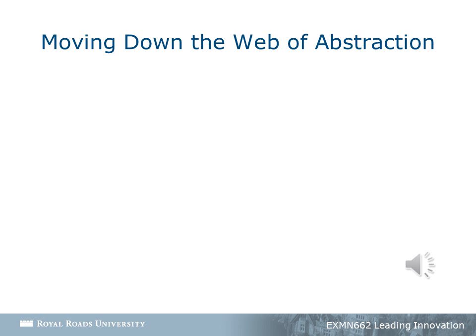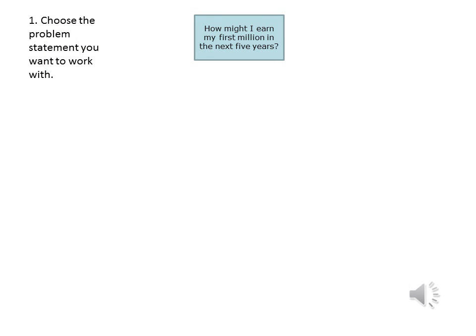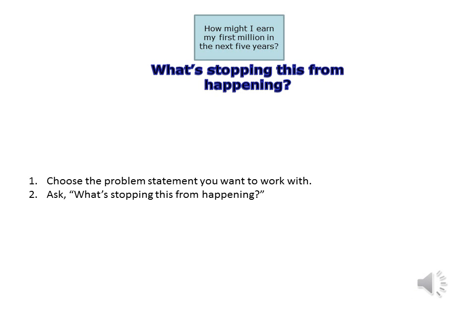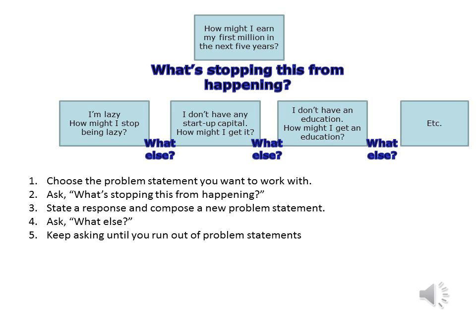Let's now discuss moving down the web. When you were moving up the web, the problem was being explored in more and more abstract terms. Moving down, you're moving into the concrete and tactical level. Let's say you keep the original problem statement: how might I earn my first million in the next five years? You then ask, what's stopping this from happening? Perhaps you're lazy. How might I stop being lazy? What else is stopping this from happening? Perhaps you don't have any startup capital. How might I obtain startup capital? You might not have any education. How might I get an education? You keep going like this until all possibilities are exhausted.